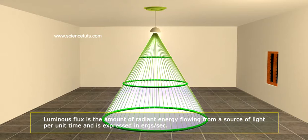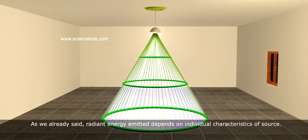Luminous flux is the amount of radiant energy flowing from a source of light per unit time and is expressed in ergs per second. As we have already said, radiant energy emitted depends on individual characteristics of source.